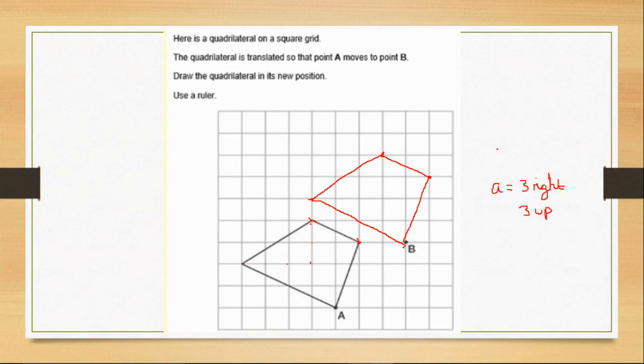So remember, reflection, the shape may change depending on what the shape is. But with translation, the shape will always stay the same. It moves around the grid. I hope you enjoyed that. Thank you. Bye-bye.